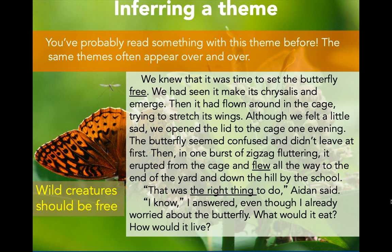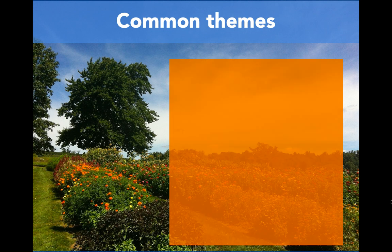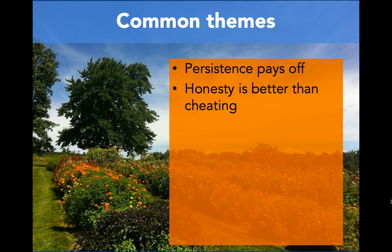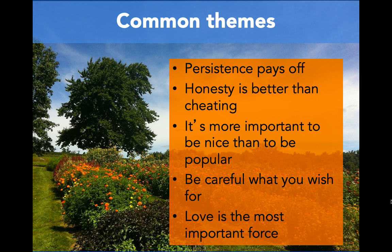The same themes often appear over and over again. Here are some common themes that we see a lot in literature: persistence pays off — meaning hard work or perseverance pays off; honesty is better than cheating; it's more important to be nice than to be popular; be careful what you wish for; and love is the most important force. So many authors write texts that tell us or teach us these kinds of themes.